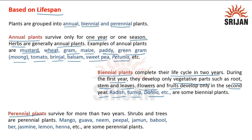Perennial plants survive for more than two years. Shrubs and trees are perennial plants. Mango, guava, tea, peepal, jamun, babul, jasmine, lemon, henna, etc. are some perennial plants.